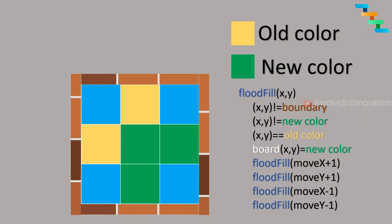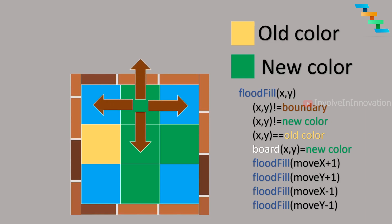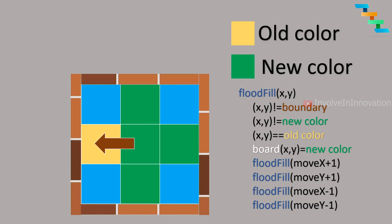From 1,1 we perform move x-1, placing us at position 0,1. Position 0,1 is yellow, so we replace the color with green. All four directions from 0,1 are invalid, so we go back to 1,1. Then move y-1 takes us to position 1,0. Position 1,0 is yellow, so we replace the color from yellow to green. This is how the flood fill algorithm works.